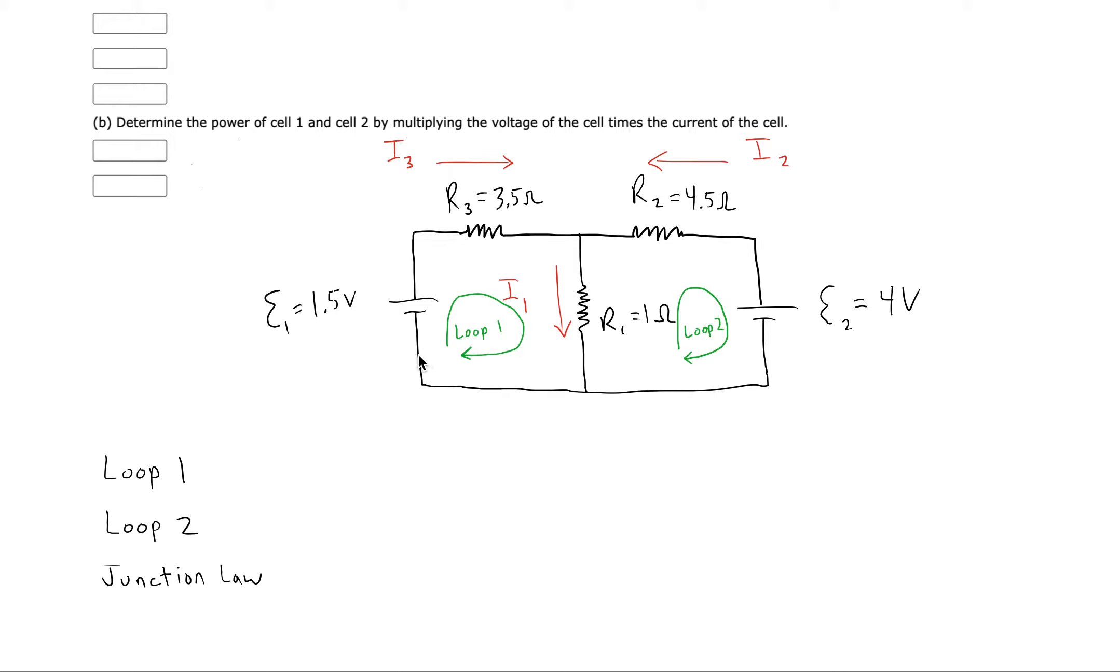But for loop 1, I want to pick a particular point on the circuit and then imagine what would it be like if I was a positive charge to go through all of these elements. So first, if you're a positive charge, you would get bumped up in energy.